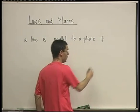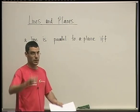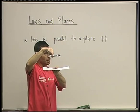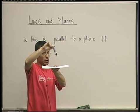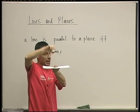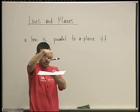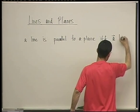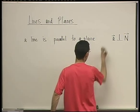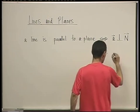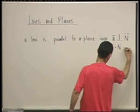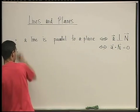...if and only if — how can I see that from their equations? The normal to the plane has to be perpendicular to the direction vector of the line. So if and only if **a** is perpendicular to **n**, which is if and only if the dot product **a · n** equals zero. This is the situation where a line is parallel to a plane.